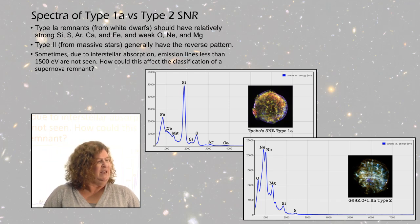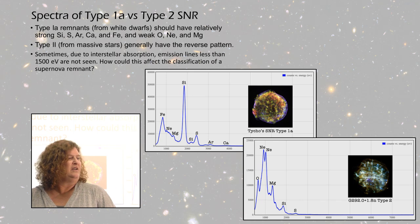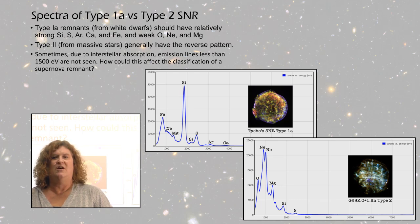You can see in the spectra that there are some definite differences around the abundance of elements. A Type 1a remnant will have strong silicon, sulfur, argon, calcium, and iron emission lines.